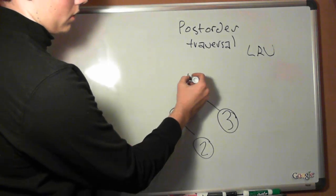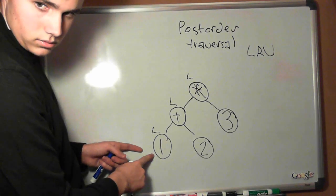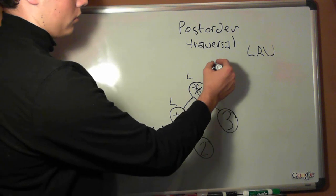So we come up here, left, left, left. We reach the bottom, which is a 1. We go right, there is no right node. So we record the value, 1.